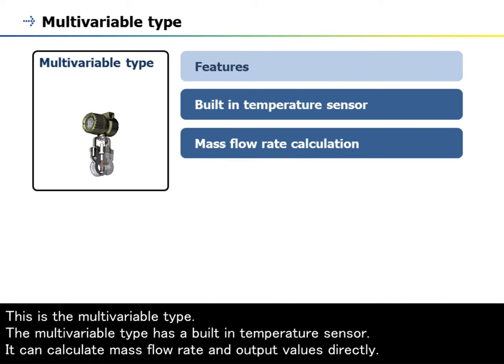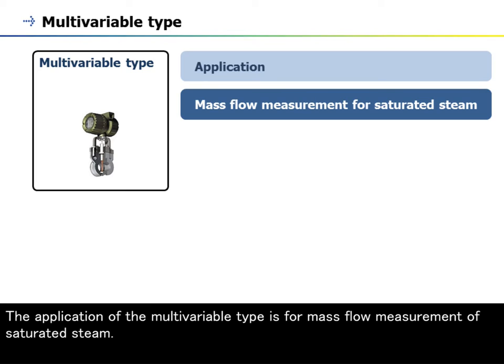This is the Multivariable Type. The multivariable type has a built-in temperature sensor and can calculate mass flow rate and output values directly. It is designed for mass flow measurement of saturated steam.